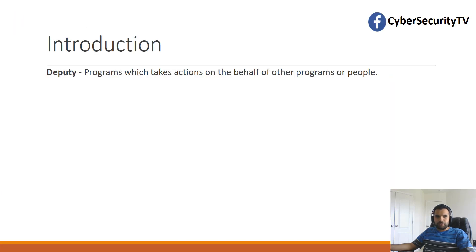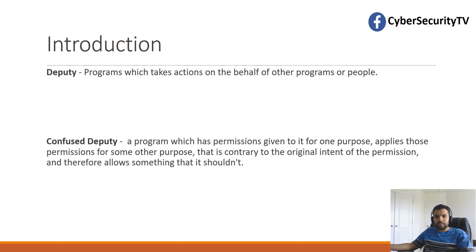So first of all, what's the Deputy? The Deputy is the program which takes action on behalf of other programs or people. For example, you ask your father to take some action — your father is now a Deputy, taking action on behalf of you. The Confused Deputy is a program which has permission given to it for one purpose, but applies those permissions for some other purpose, contrary to the original intent, allowing something that it shouldn't.